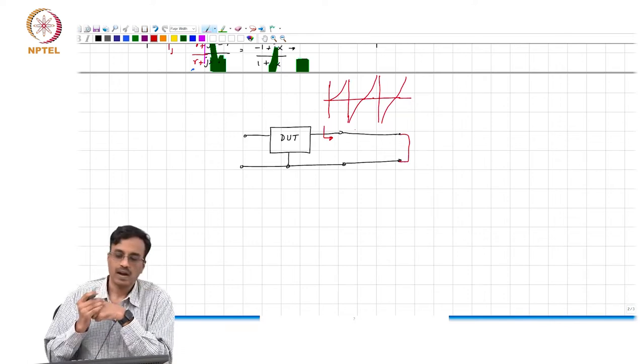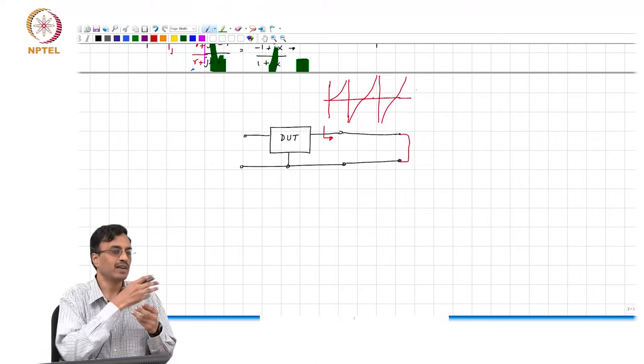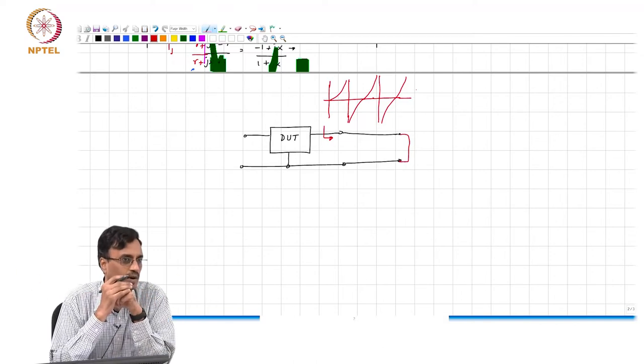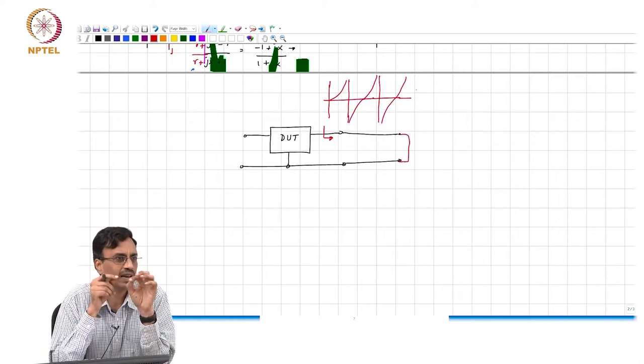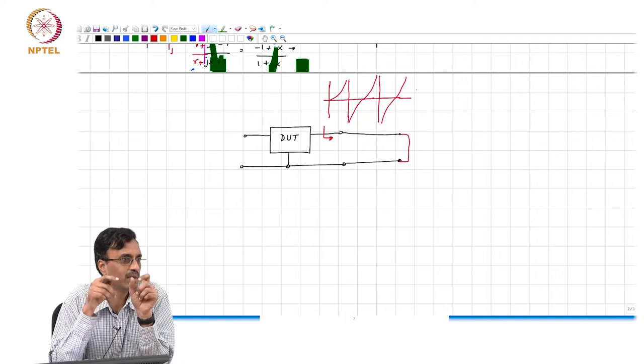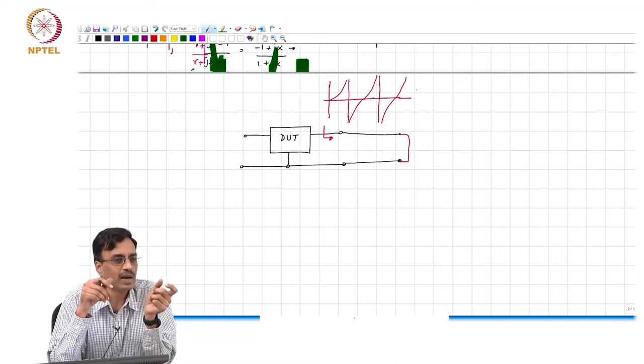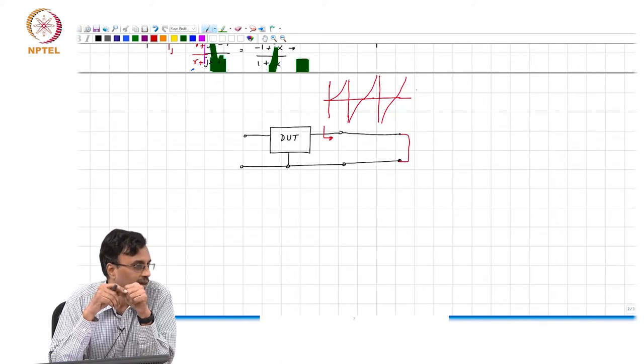And because the extent of the transmission line is infinite, you have an infinite number of such networks right. The order of the network is actually infinite because the transmission line as you can see is made with infinitely many infinitesimally small L's and C's.